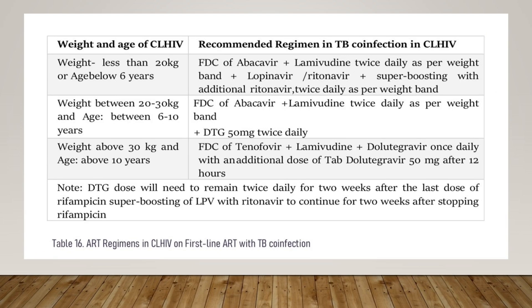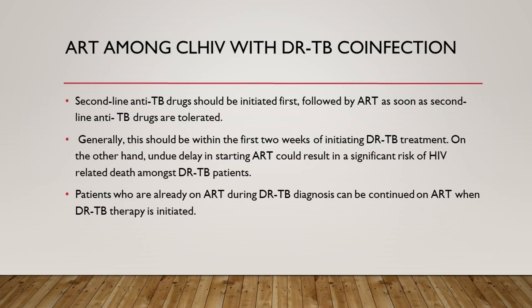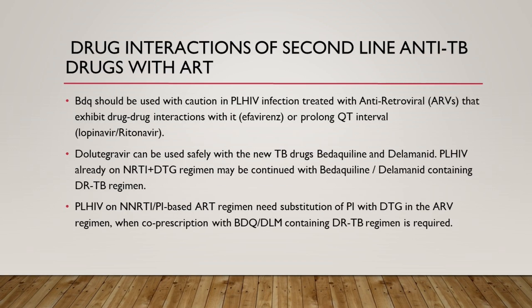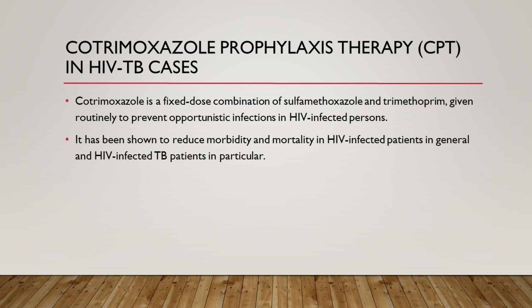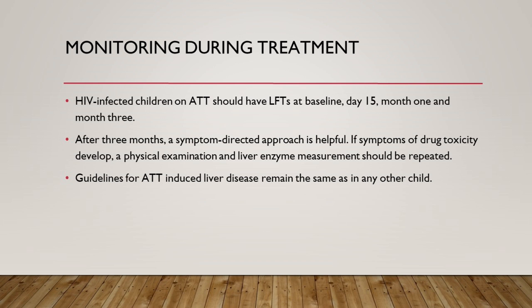For DRTB-HIV, start with second-line drugs first, get it under control, then after 2 weeks to 2 months start ART. Be cautious if using efavirenz or lopinavir-ritonavir with BDQ — these two drugs require care. Dolutegravir, which is your first-line regimen, can be used safely in these patients. Co-trimoxazole can be used in an HIV-TB patient combination without concern. In HIV patients on these regimens, monitor liver function tests more frequently than in non-HIV patients.